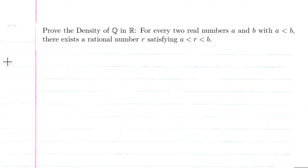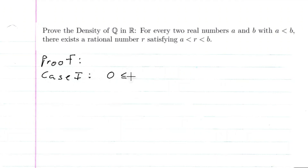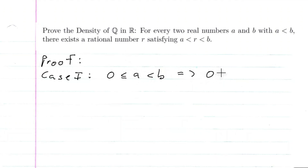So let's go ahead and start the proof. For this proof, I'm going to split it off into three cases. The first case is going to be when 0 ≤ a < b. Of course, if I subtract a from both sides, I get 0 < b - a.